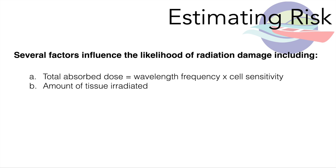Another thing that influences our risk estimate is the amount of tissue irradiated — so how big a field of view are we exposing to radiation? Are we choosing that 8 by 8 centimeter field or the smaller 5 by 5? Also our age: younger individuals with immature developing tissues are always at a greater risk for radiation damage. And the last is dose rate — radiation damage is additive, and a greater dose applied over a shorter period of time may actually increase the likelihood of damage.